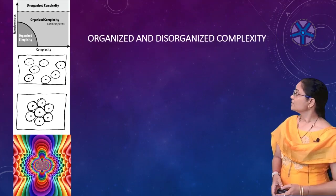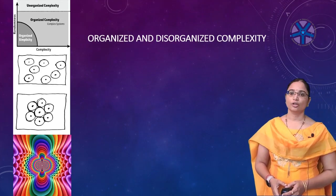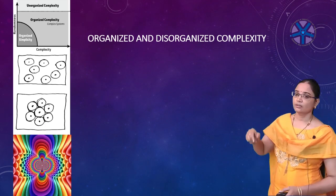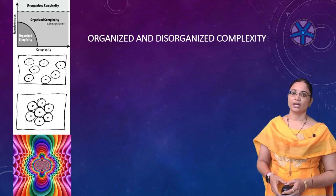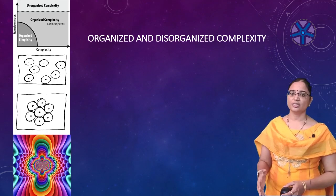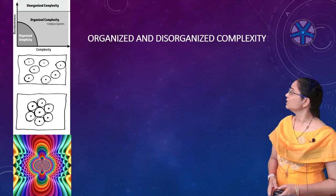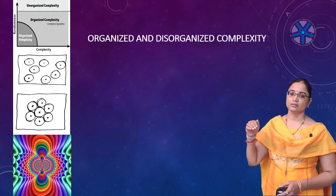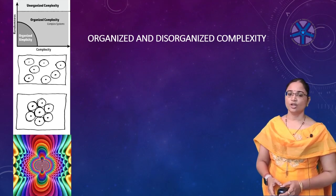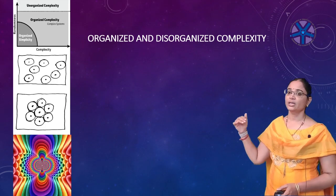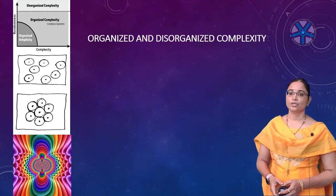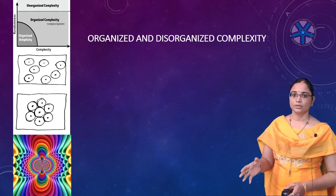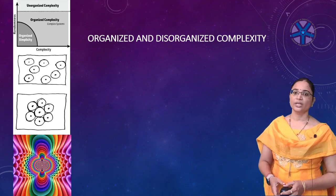In the first topic we are going to see organized and disorganized complexity. In the PPT you can see a figure that tells about unorganized and organized complexity. The randomness of unorganized complexity increases as the system moves from organized to unorganized, and the complexity of the system also increases. So we need to convert disorganized complexity to organized or simplified complexity, and in order to do so we need to follow two methods.